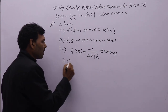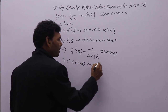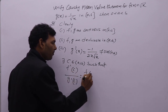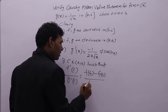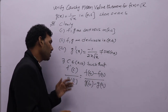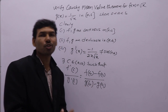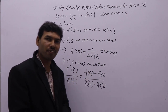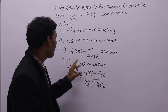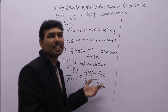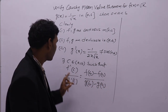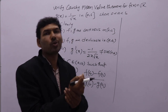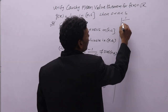Then there exists c in open interval (a, b) such that f dash of c divided by g dash of c equals f(b) minus f(a) divided by g(b) minus g(a). This condition should be satisfied such that c belongs to open interval (a, b). We take this equation and find the c value, then verify that c lies between a and b.